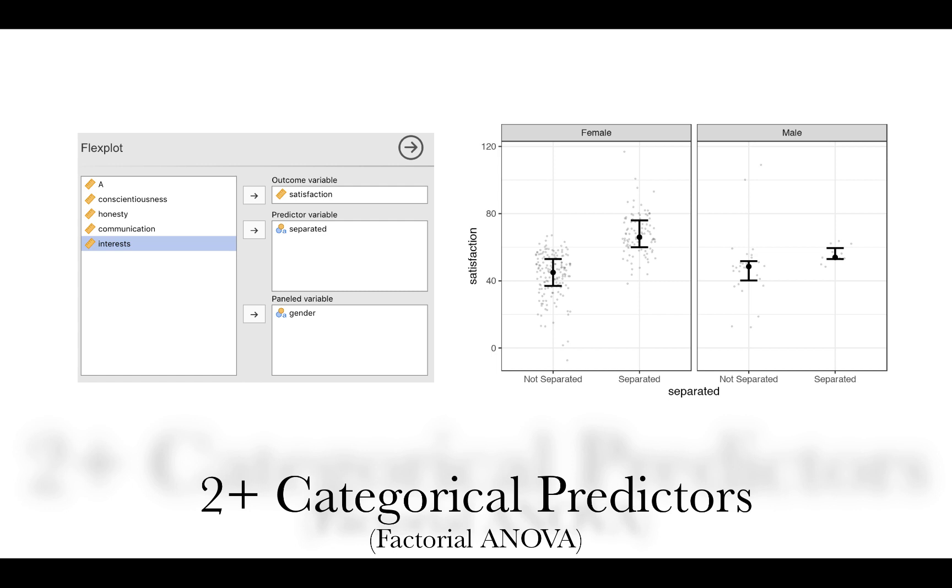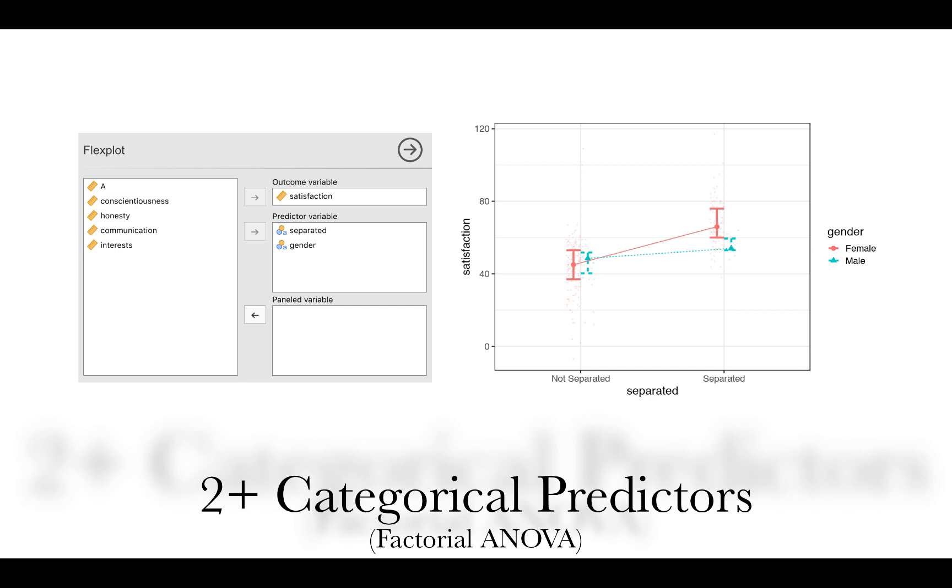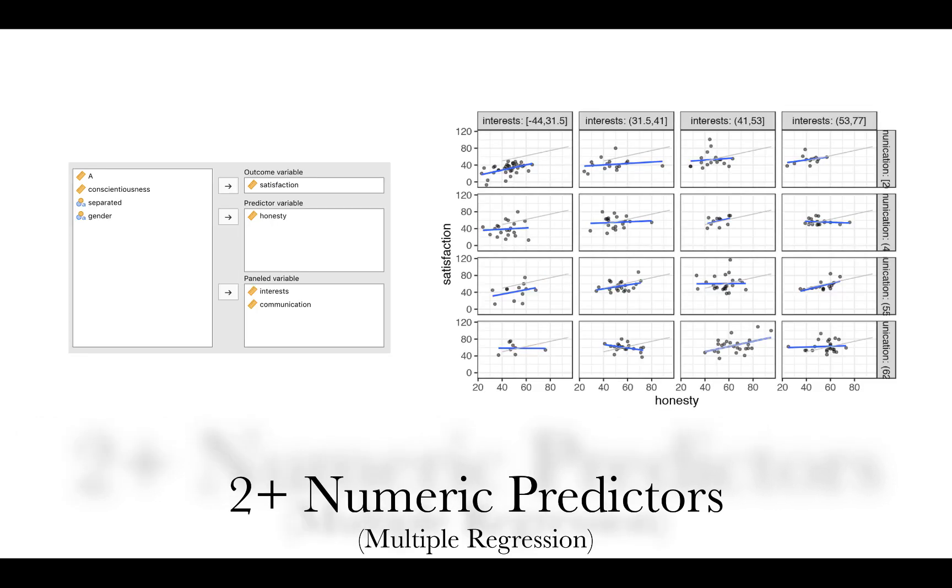Or if you're doing a factorial ANOVA, here's one example where you can decide to panel on gender, so males in one panel, females in another panel. Or you could decide to do them in the same panel. And doing this sort of stuff is extremely easy with Flexplot. It's just a matter of pointing, clicking, and dragging. Clicking on the arrows, however you choose to do it.